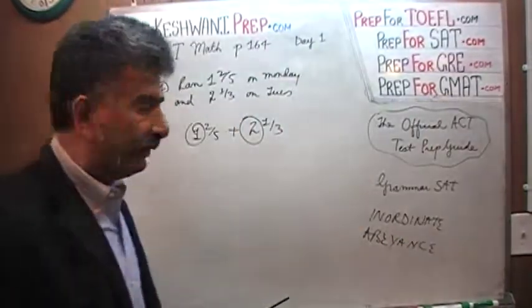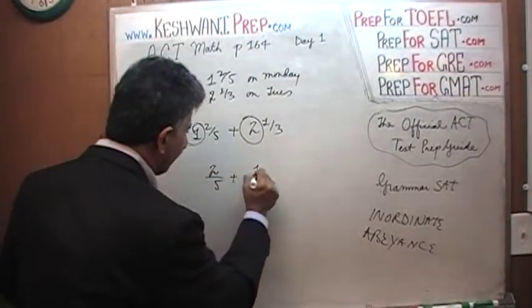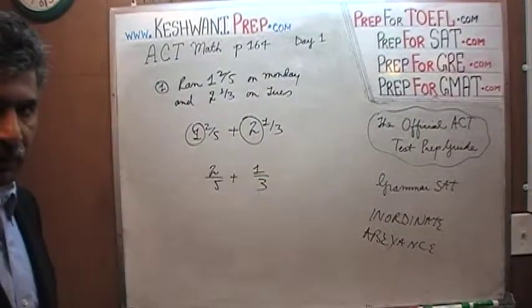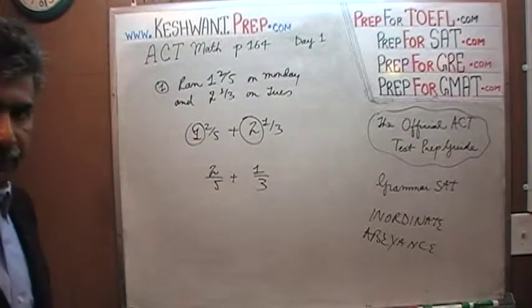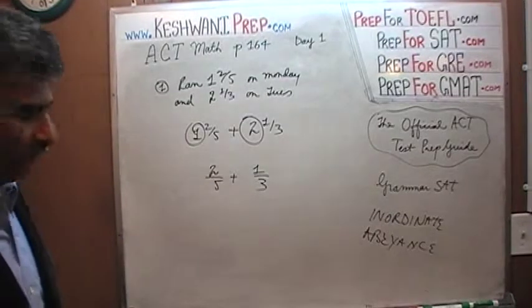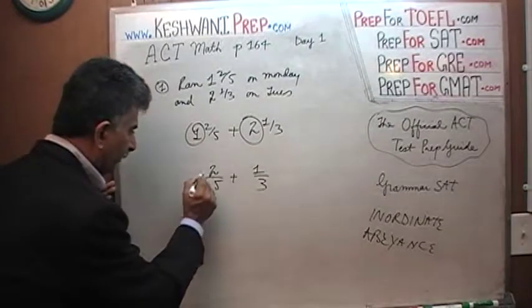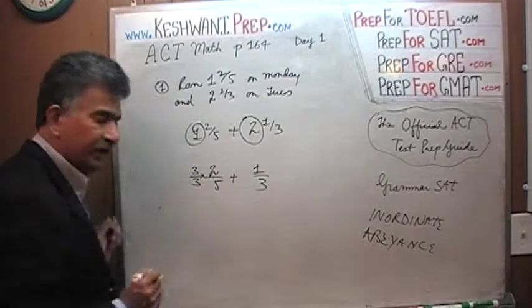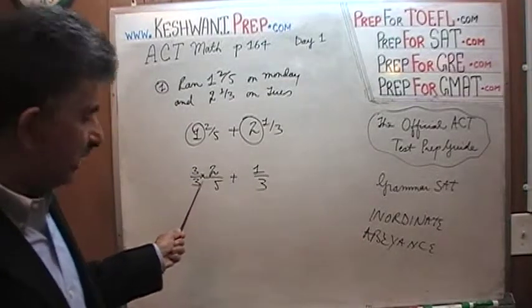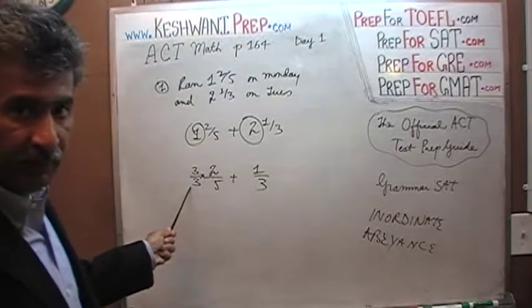Let's leave 1 and 2 in abeyance and work on the fraction part first: 2/5 plus 1/3. We have to make the denominator the same before we can work with the numerators. We have a 5 and a 3, so let's make the denominator 15 for both. To convert 2/5, multiply the top and bottom by 3 — that's multiplying by 3/3, which is just 1, so we haven't changed the value of the fraction.